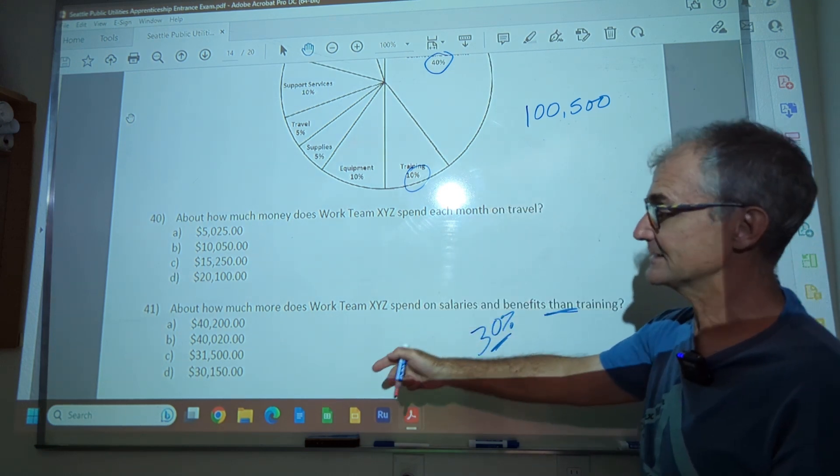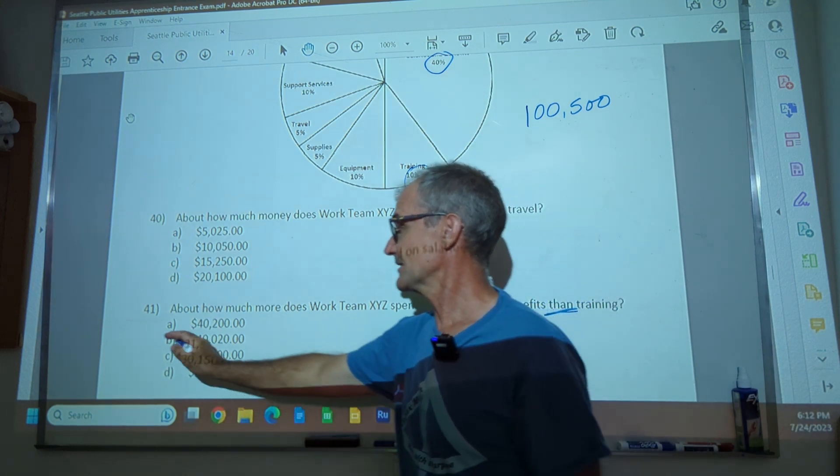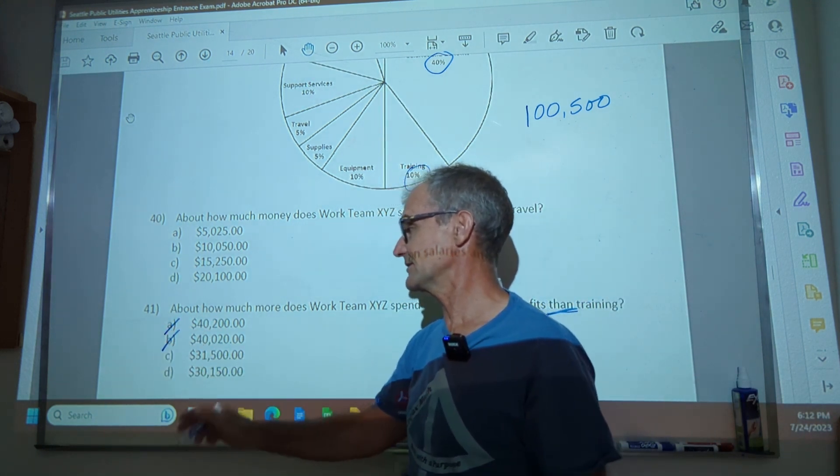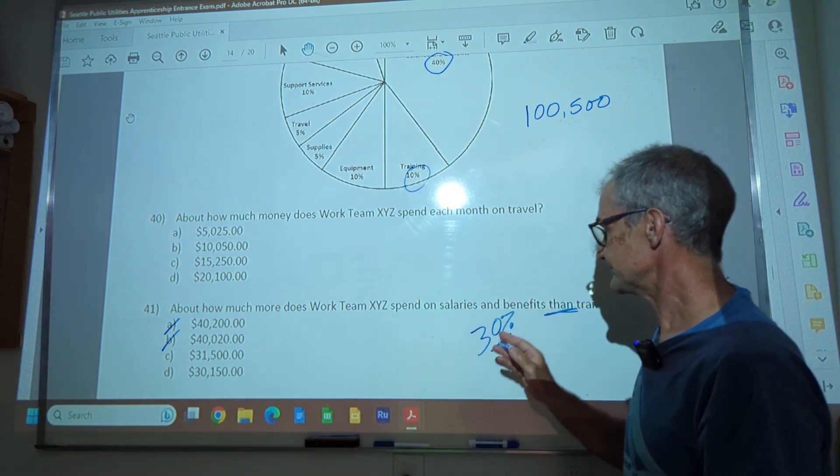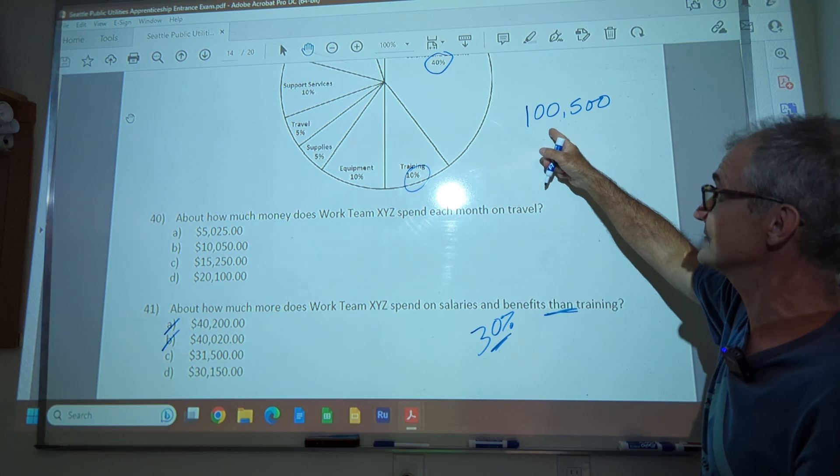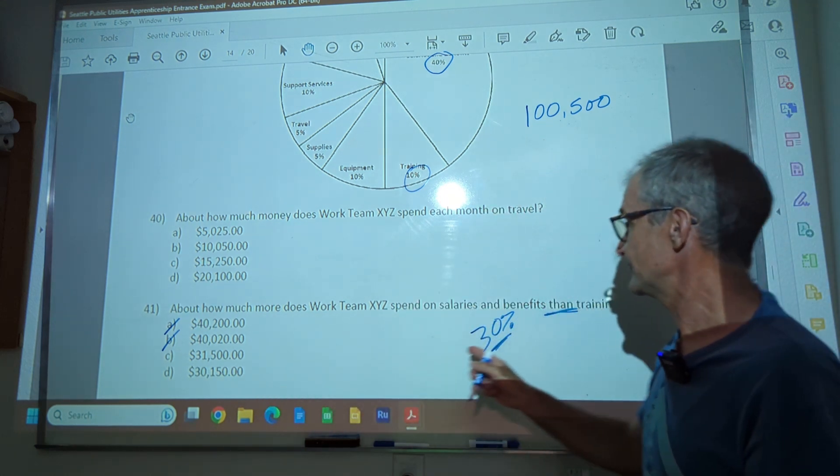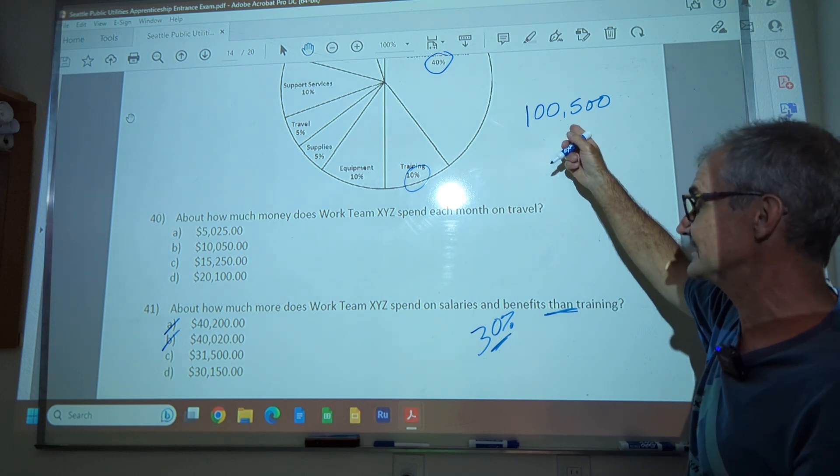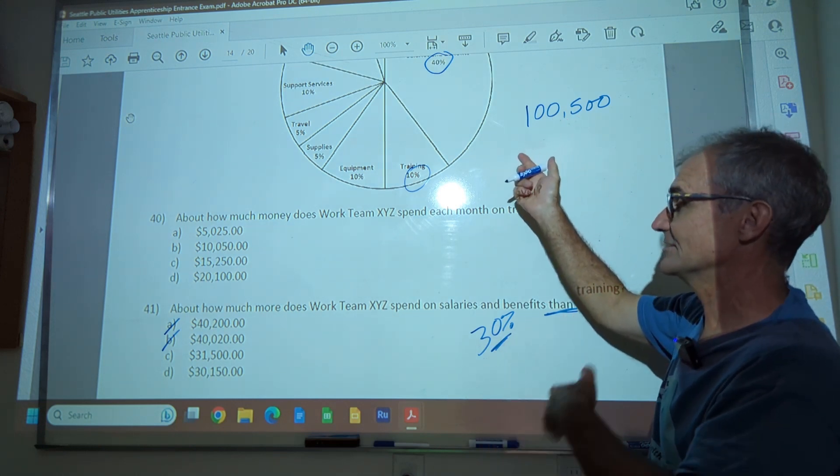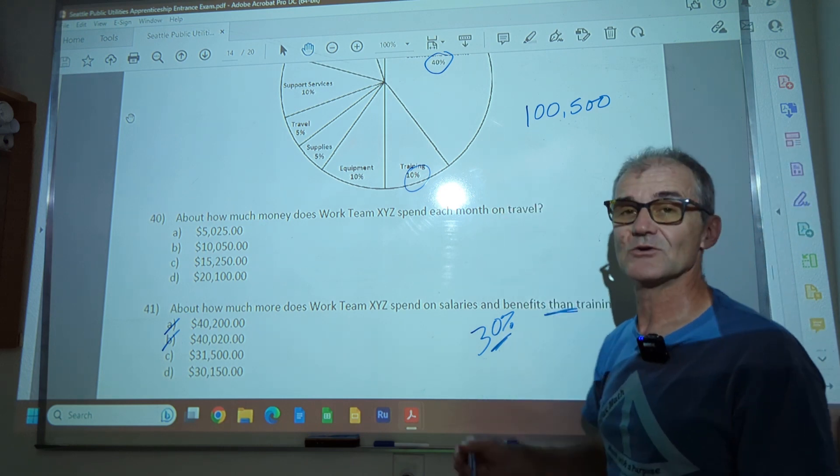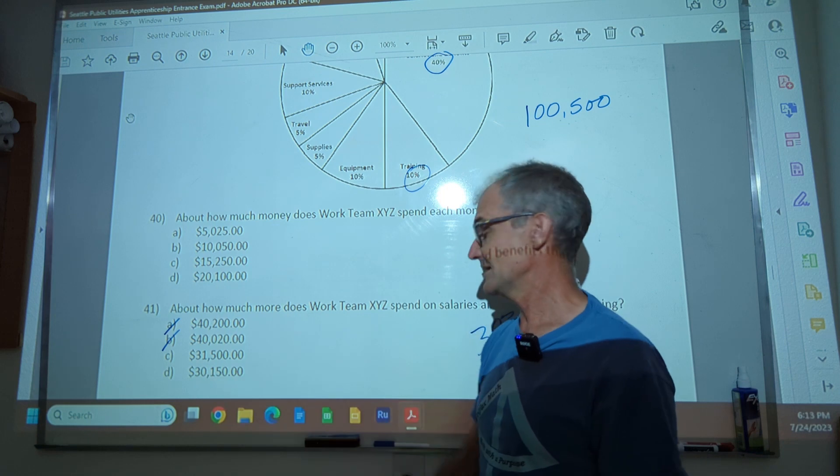So I'm going to do that 40% minus that 10% to give me 30%. So I want 30% of a hundred thousand. I look down at my answers. I know it's going to be close to $30,000. This one and this one aren't even close. I cross them out. It has to be between one of these two. 30% of a hundred thousand is $30,000. 30% of 500, you know, it's not going to be that much, right? 10% of 500 is 50. So it's going to be three times more than that or 150. So I could see that this is a correct answer. Answer D.